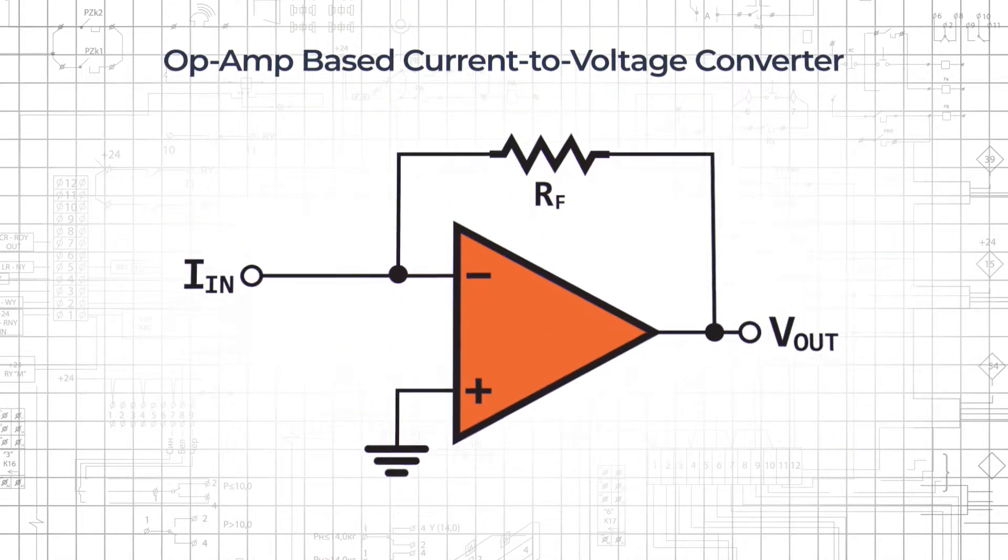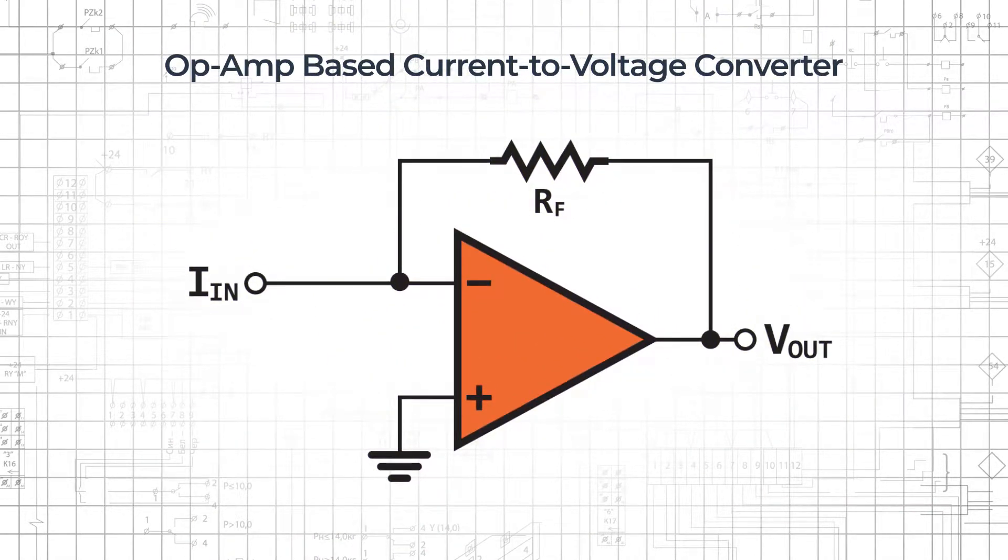In this video, we'll study an op-amp based current to voltage converter, also known as a transimpedance amplifier, shown here in its most basic form.